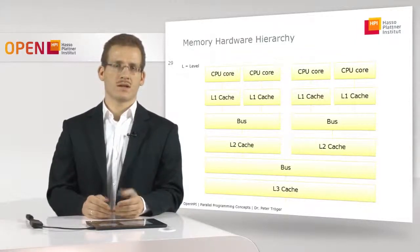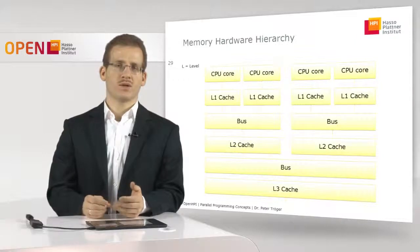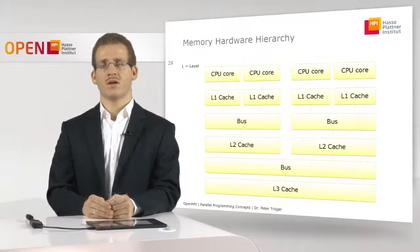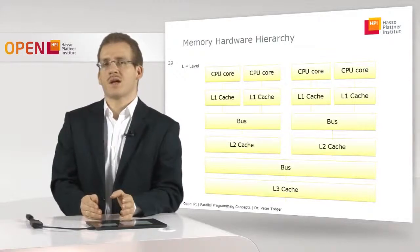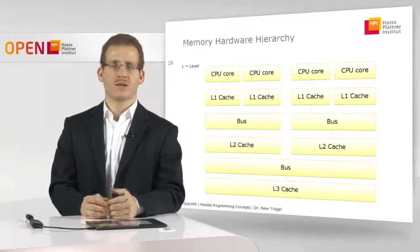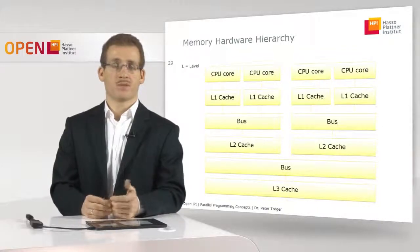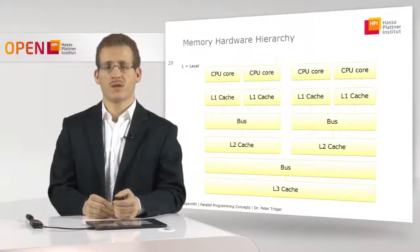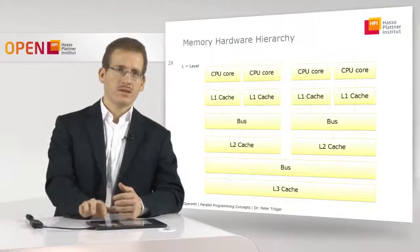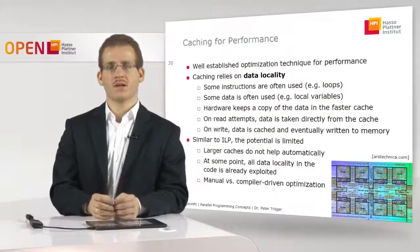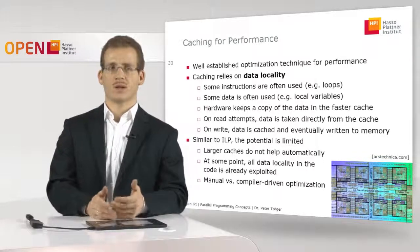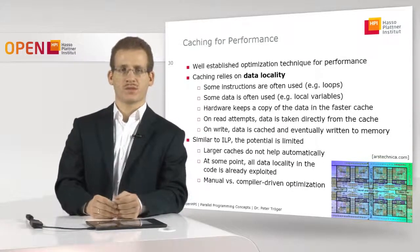This is an interesting idea because what we could do is use the additional transistors from Moore's law to just build larger caches all the time in order to get faster processor hardware. This would again give us better, faster software without actually modifying the software itself. This idea worked for some time, and therefore caching is — like ILP — a well-established optimization technique for performance improvements.